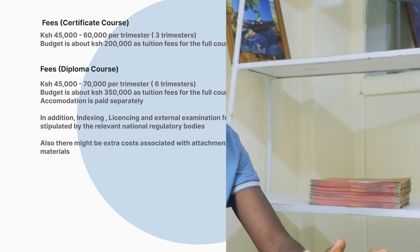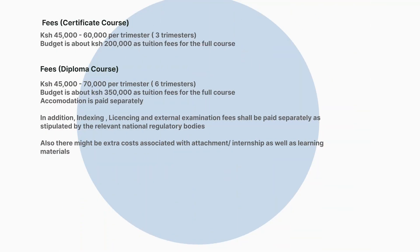Starting with the duration: the certificate is short because it takes just one year. Of course, there is a bit of internship involved, but generally one year. For the diploma, it's the longer one — it takes two years, and again there is a bit of internship involved. So for the diploma, two years; certificate, one year.